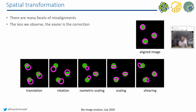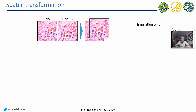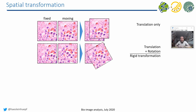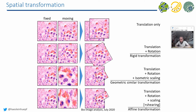Last but not least, shearing — basically a skewing movement within your image — can also occur, and correcting for this may be even more complicated. When combining these different misalignments, we get specific terms: if an image is just translated, we apply a translation registration. If translation and rotation are present, we call it a rigid transform. If translation, rotation, and isometric scaling are present, that's the geometric similarity transformation. If non-isometric scaling and shearing are also present, we call it the affine transform.